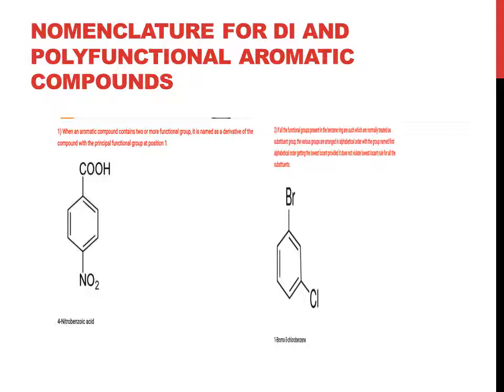Point number 2: if all the functional groups present in the benzene ring belong to the same group, then they are ordered alphabetically. For example, if there are two substituents — bromo and chloro — then according to alphabetical order, B comes first. So bromo is given position 1 and written first: 1-bromo-3-iodobenzene.